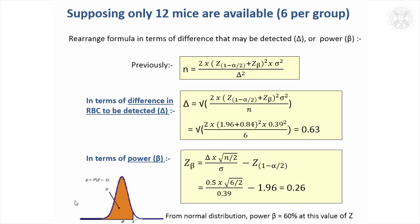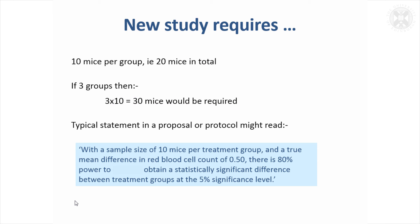If you put something like that in a statement in a proposal and you just said 60%, I think people would immediately zero in on that and say, well, this study's not got enough power. So you definitely wouldn't want to be in that situation if you're applying for funding.